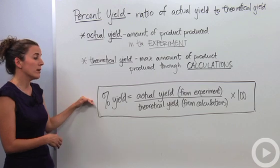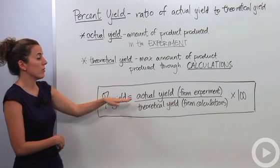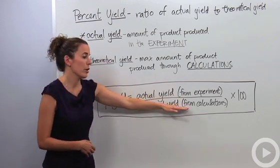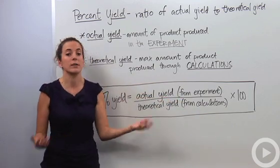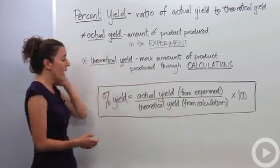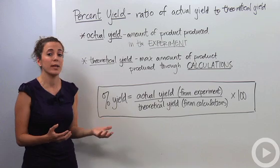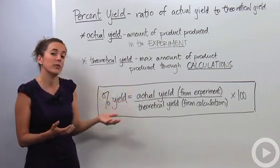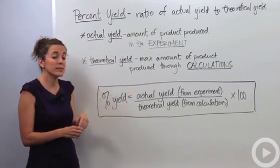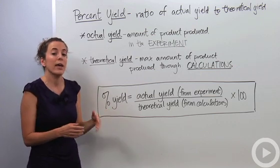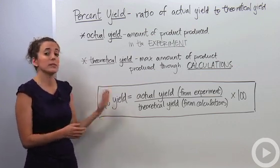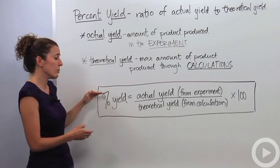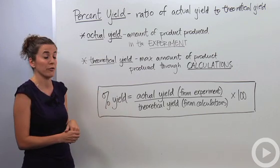Percent yield is a ratio: the actual yield over your theoretical yield — actual from the experiment over from your calculations — times 100 because it is a percentage. Can you have a percent yield over 100%? Sure. You can have an actual yield higher than your theoretical yield due to contamination. You can also have a percent yield lower than 100 if you lost some product, so percent yield can be above or below 100.